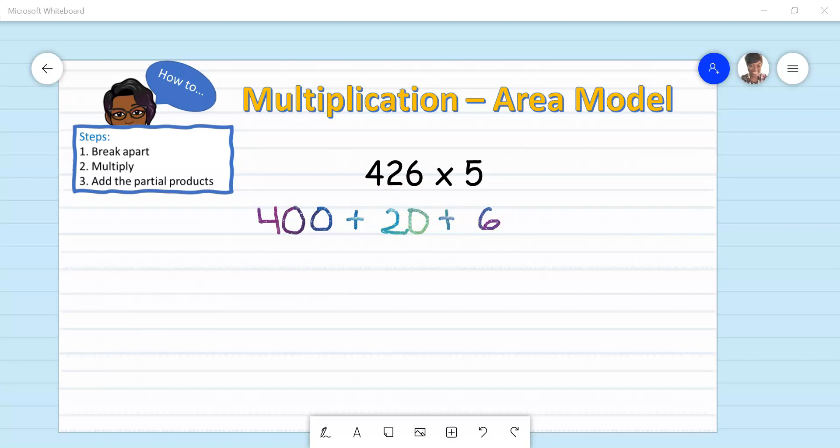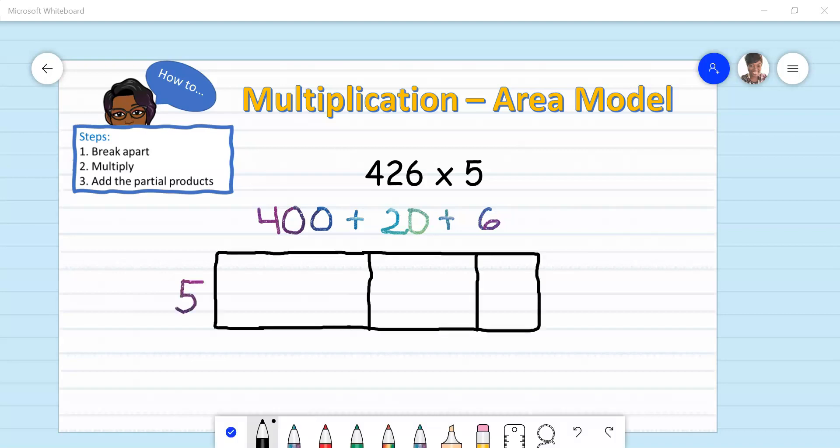Now that I have broken 426 apart, I am ready for step two, and that's to multiply. And I will do that by creating my area model. For this area model, I've created three columns and one row because I broke up 426 into 400, 20, and 6, three different numbers. Therefore, I need three separate columns. And since I did not decompose or break apart the 5, I simply need one row.